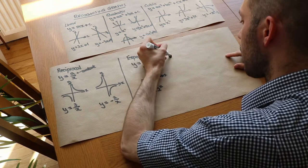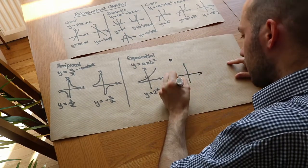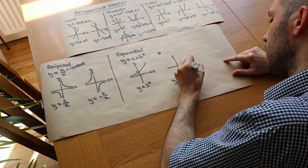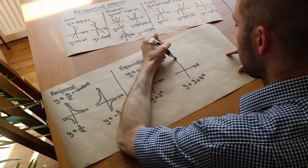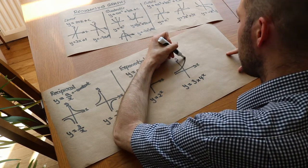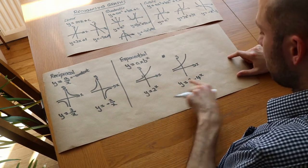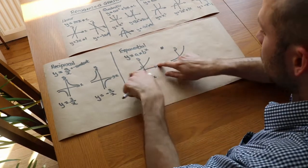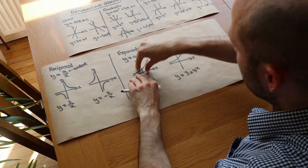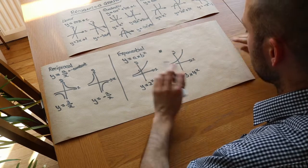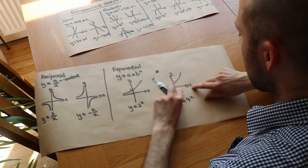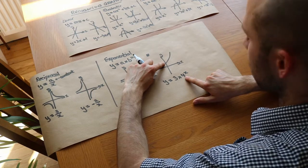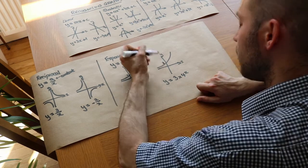For another example, y equals 3 times 4 to the x. It has exactly the same shape — always above the x-axis. It will be steeper than the previous graph because b is 4 rather than 2, but since the axes scale may differ on separate graphs, we can't always tell the steepness visually. What we can determine is the y-intercept: when x is 0, y equals 3 times 4 to the 0, and since anything to the power of 0 is 1, that gives y equals 3.